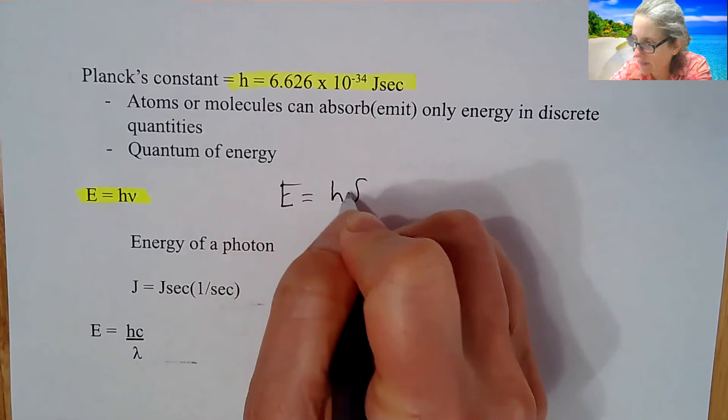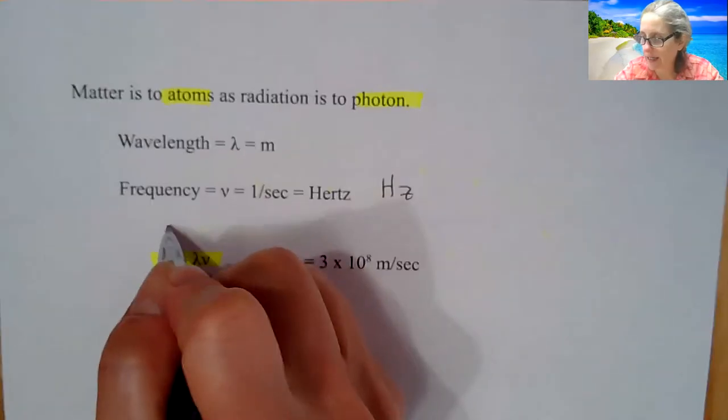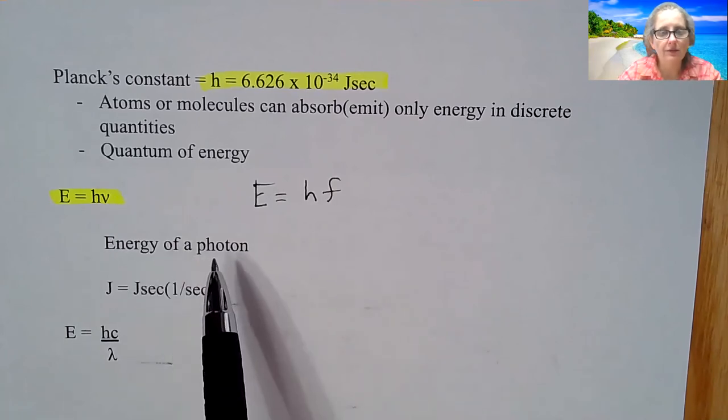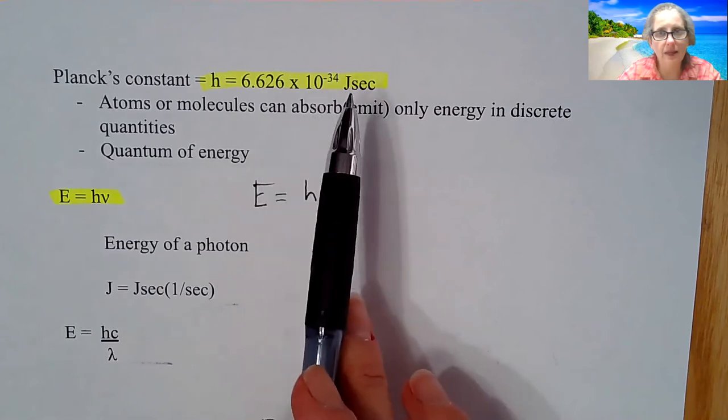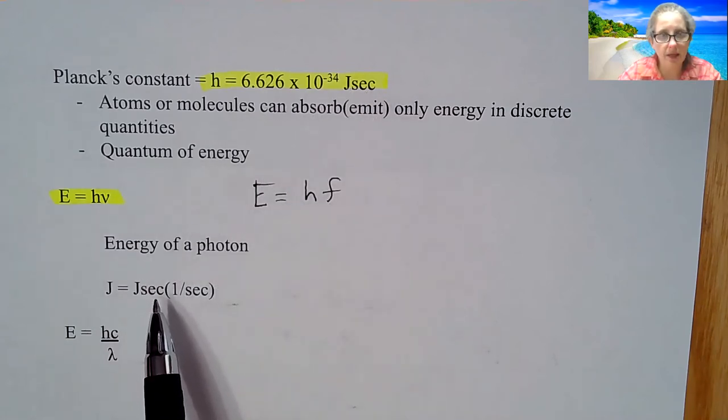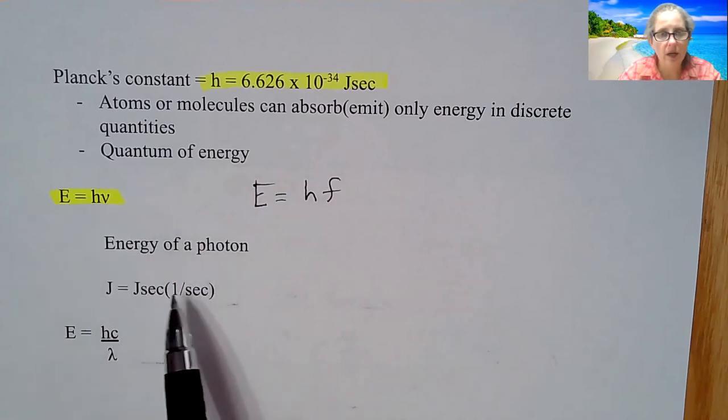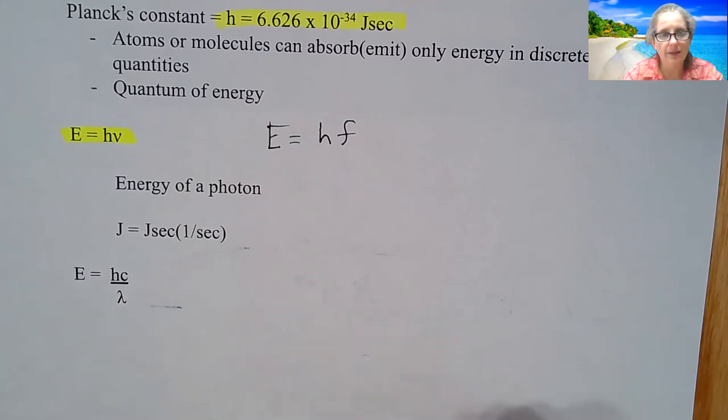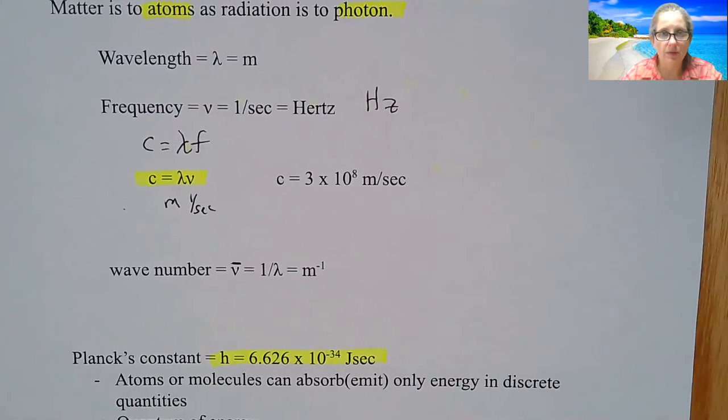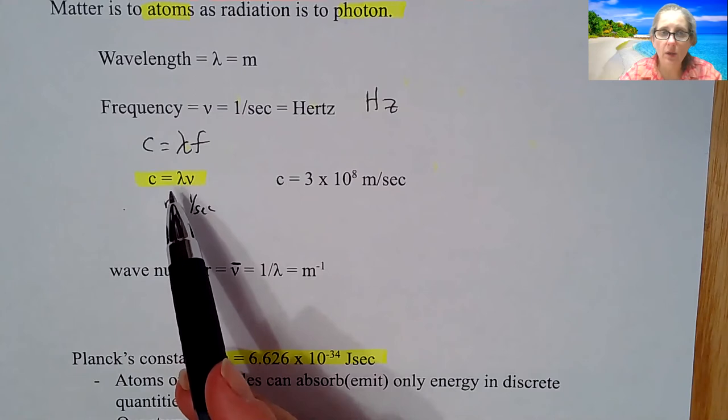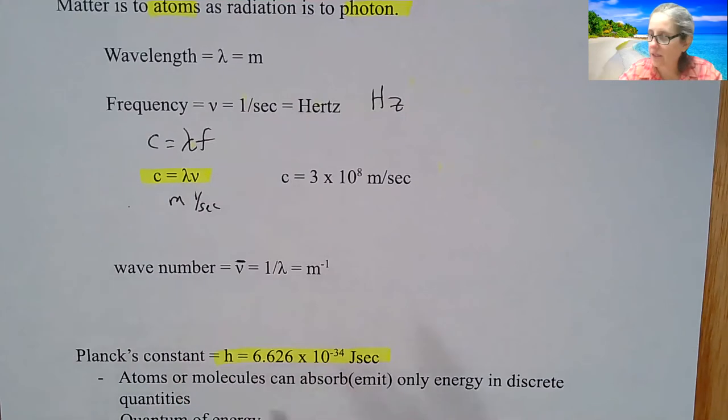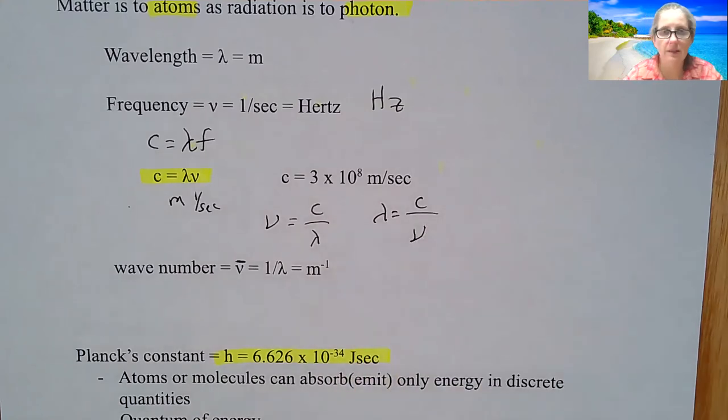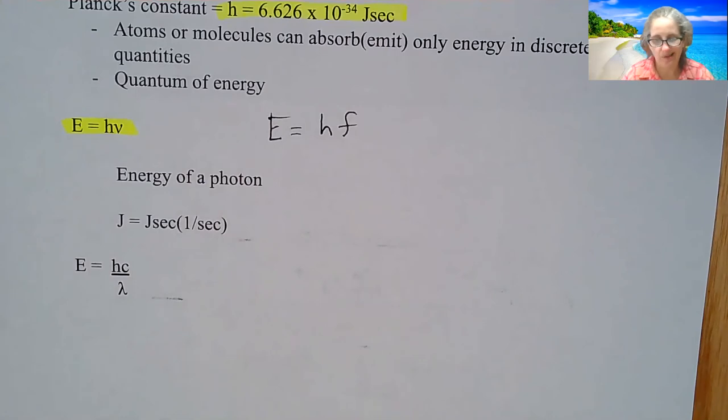This is a very simple equation but a very important one: Energy equals Planck's constant times frequency. You could write this as Planck's constant times f if you like that better. The energy of a photon is going to be in joules. If I have my joule seconds for Planck's constant and multiply it by our frequency, I'm essentially left with a joule. The last equation, energy equals Planck's constant times the speed of light over lambda, is a way to combine both together.